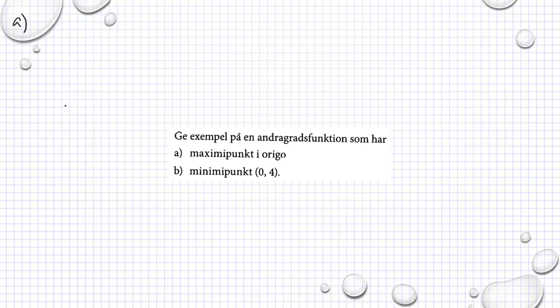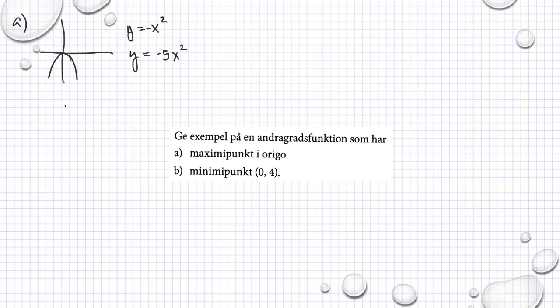I have an example here — maximum point, here maximum point. x up to 2 — negative x, therefore it is negative 5x up to 2. It is not, therefore...